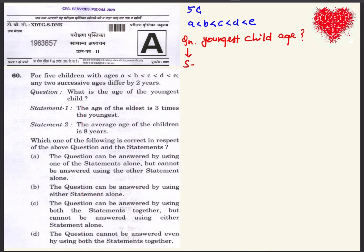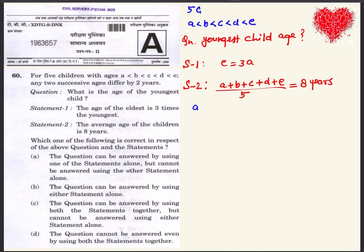There are two statements. The first statement says the eldest child's age is three times the youngest child's age. The second statement says the average age of the five children is 8 years, meaning the sum of ages divided by number of children equals 8.